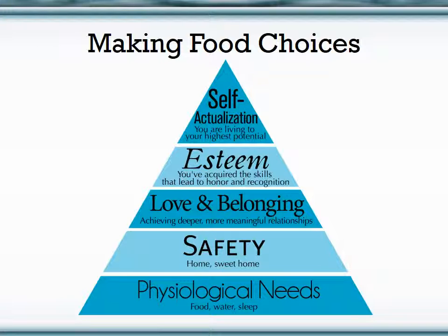Making food choices is a highly complex process that many factors go into. We're going to first take a look at how different lifestyle circumstances are related to different food choices. What you're looking at here is Maslow's Hierarchy. This breaks down different human needs into different categories and rates them in terms of basic to complex, and which need to be accomplished before you can remain stable at a higher level. Before you meet self-actualization, you have to meet physiological needs, safety needs, love and belonging, and esteem needs.